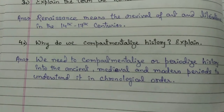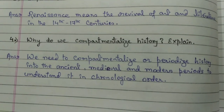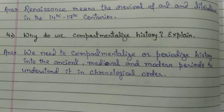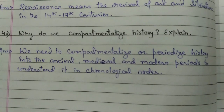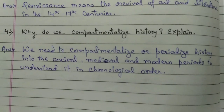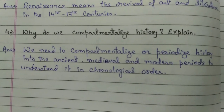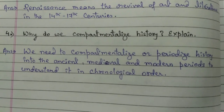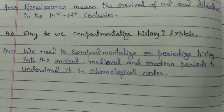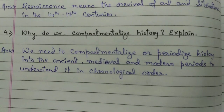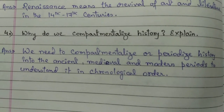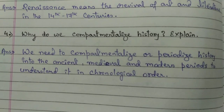Number 4 question: why do we compartmentalize history? We need to compartmentalize or periodize history into ancient, medieval, and modern periods to understand it in chronological order — meaning step by step. We can't learn about Mahatma Gandhi and then the Mughals and then old ones; we have to learn it accordingly, like the early men, then the Mughal Empire, then Mahatma Gandhi. This is the meaning of chronological order. The first period is ancient, second is medieval, and modern is the third, in which we are still living.